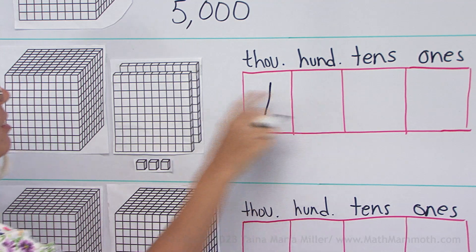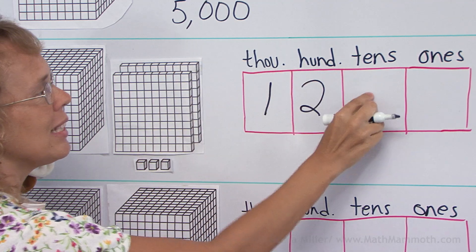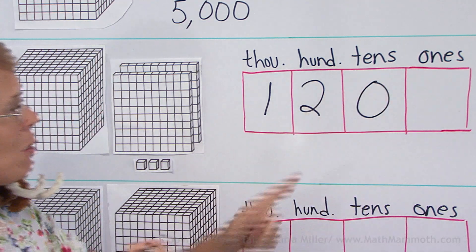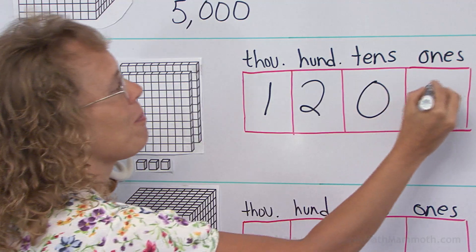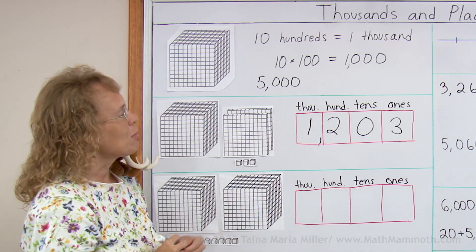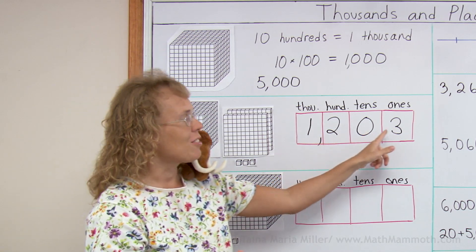And then the hundreds, there was two of them, tens, there are no tens, put a zero there. Ones, there are three and there would be a comma here. And we read this as one thousand two hundred three.